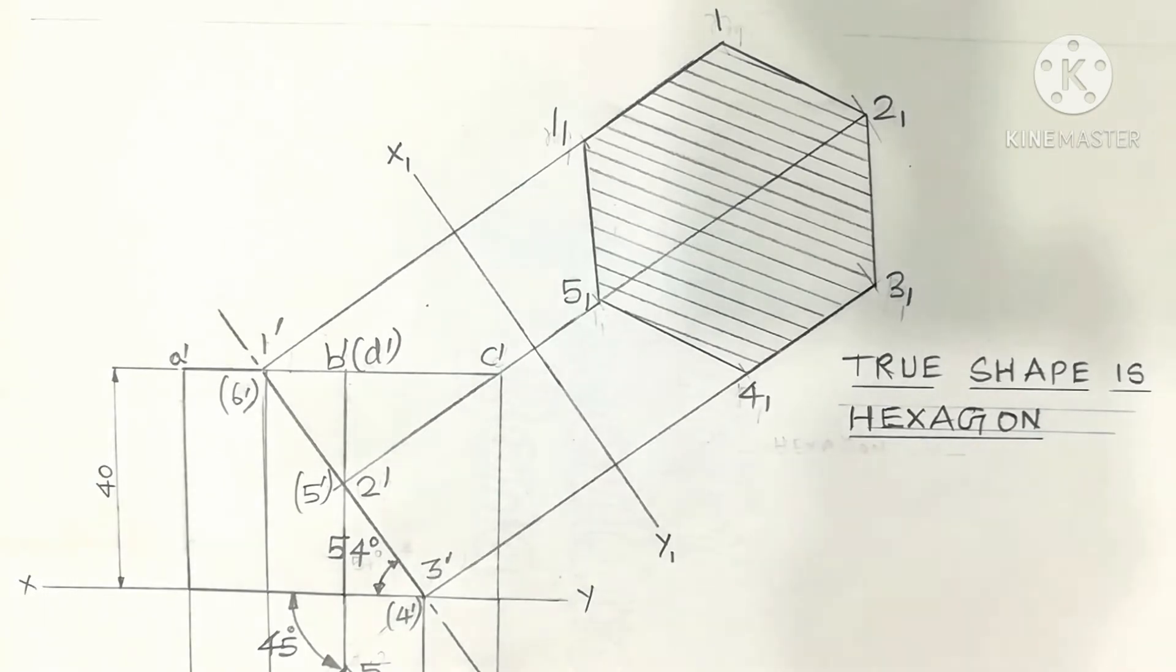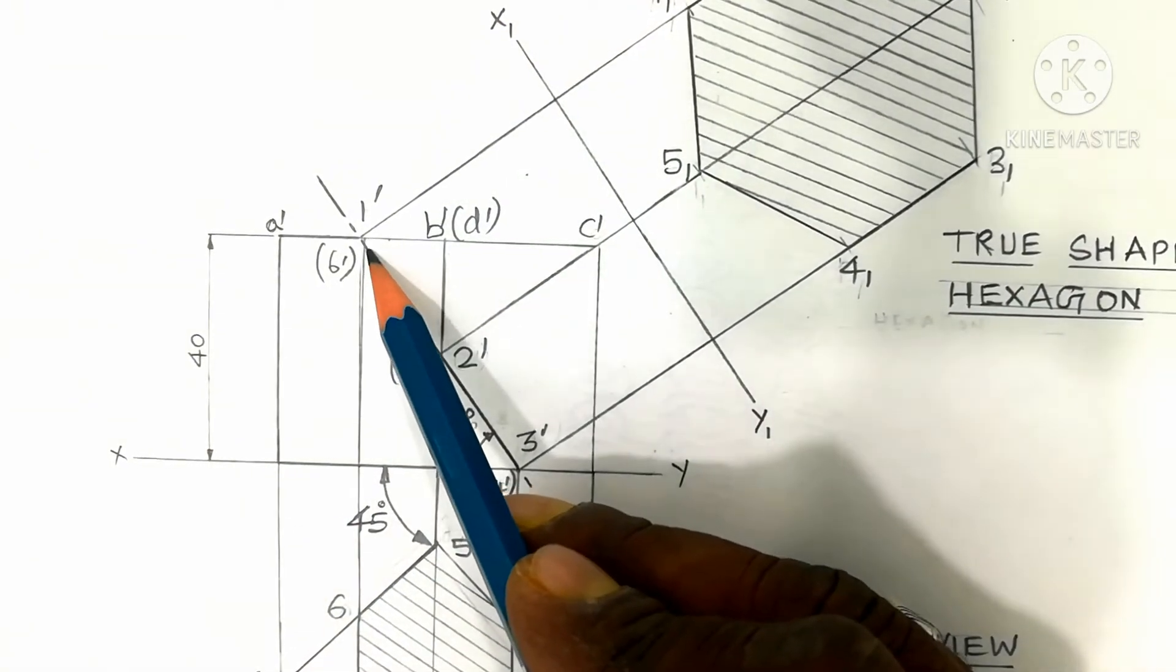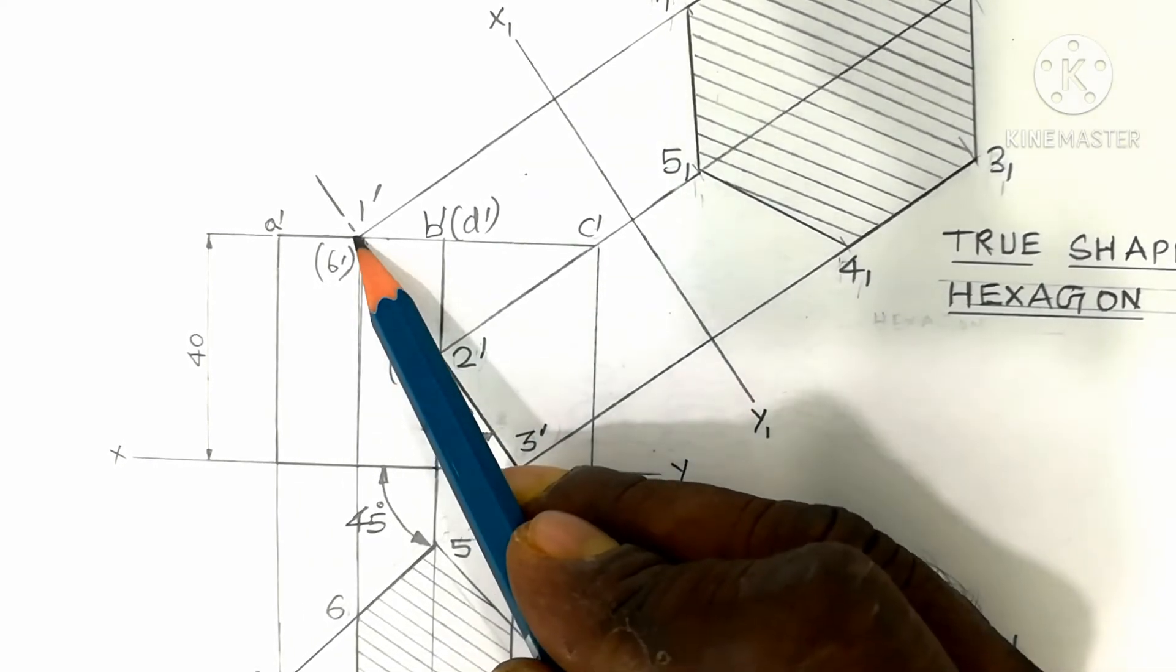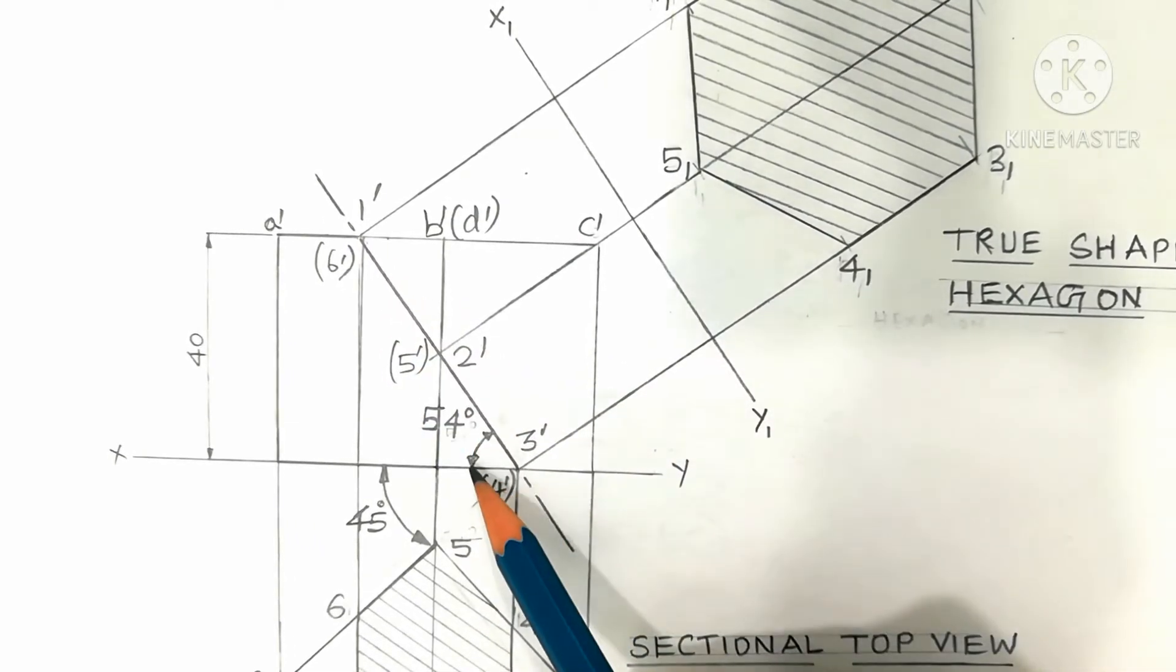This view is called front view shown above the xy line. This is the location of the cutting plane: 1 dash, 2 dash, 3 dash, 4 dash, 5 dash, 6 dash. The cut points is the location of the cutting plane inclined at 54 degrees. This is the obtained answer.